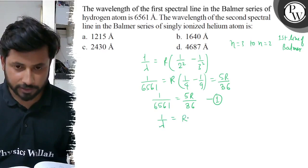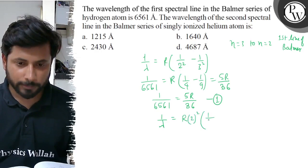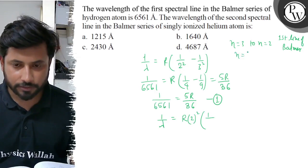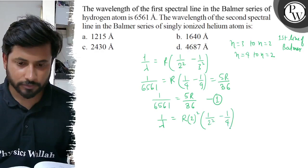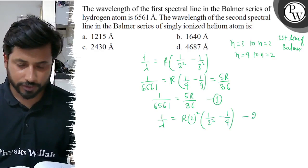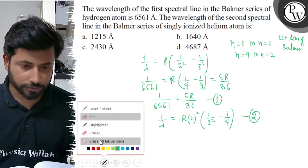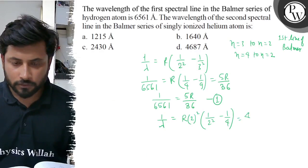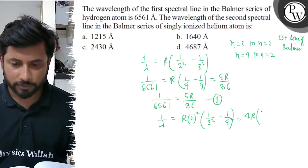For singly ionized helium atom, Z equals 2. So 1 by lambda equals R into 2 squared, into 1 by 2 squared minus 1 by 4 squared. This gives us 1 by lambda equals 4R into 1 by 4 minus 1 by 16. This is equation number 2.